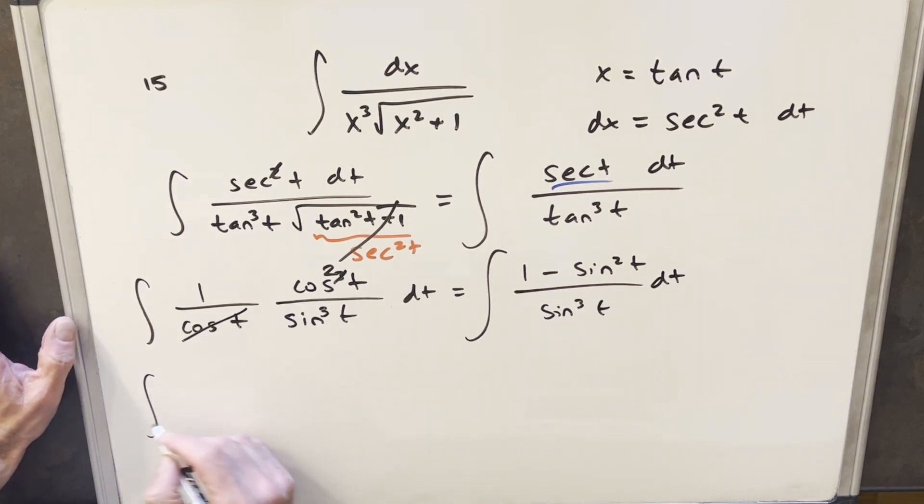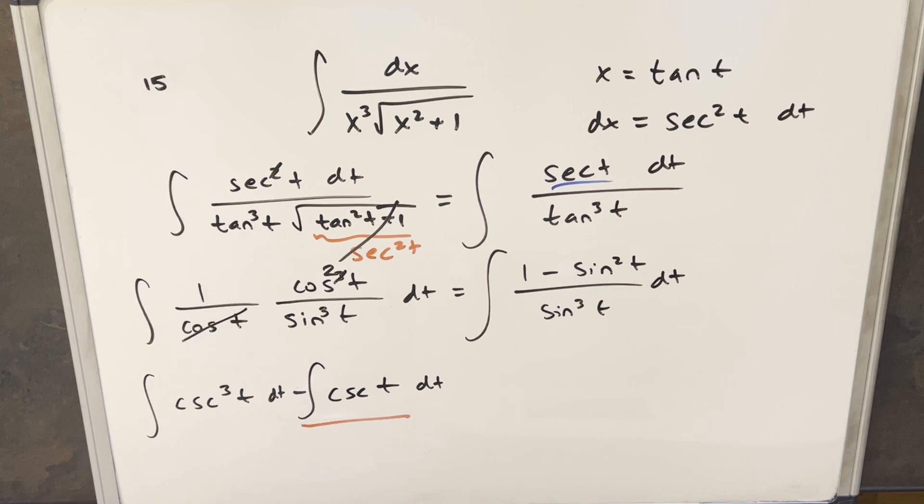But then I can just split this up into two integrals. So the first one's going to be 1 over sine cubed t, which I'll write as cosecant cubed t. And the second integral is just going to become cosecant of t. Now for this one, this is a really common integral. I'm just going to use the formula for this. So what I'll do is we'll write this as natural log absolute value cosecant t minus cotangent t.